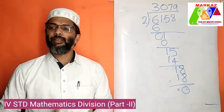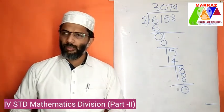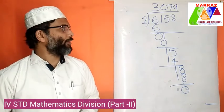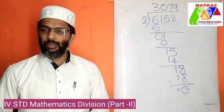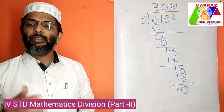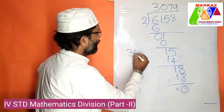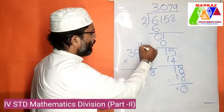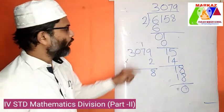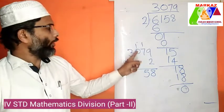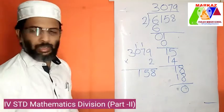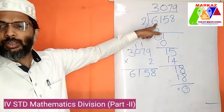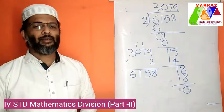How do we verify this answer is correct? After completing your work, multiply the divisor with the quotient. The quotient is 3079 and the divisor is 2. Multiply 3079 by 2: 2 into 9 is 18, carry 1; 2 into 7 is 14, plus 1 is 15, carry 1; 2 into 0 is 0, plus 1 is 1; 2 into 3 is 6. The product is 6158. Look — that matches our dividend 6158. Our division answer is correct.